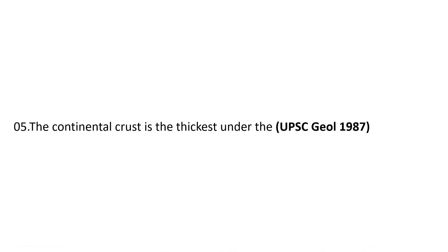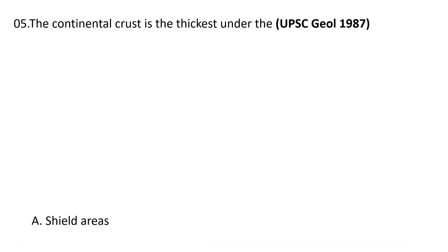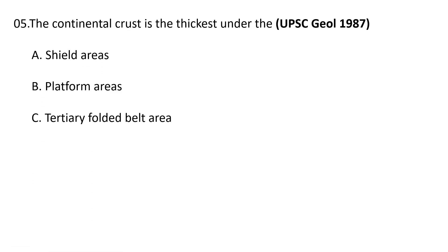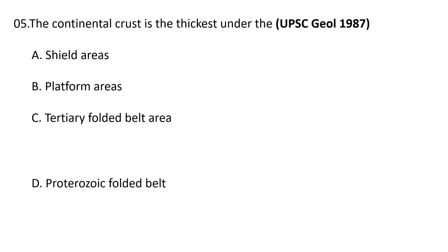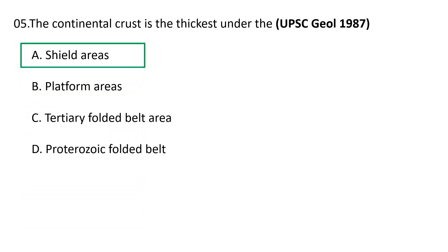Fifth question: the continental crust is thickest under the — choices are: a) shield areas, b) platform areas, c) tertiary folded belt areas, and d) Proterozoic folded belt. The correct answer is a) shield areas. The continental crust is thickest under shield areas and orogenic belts.